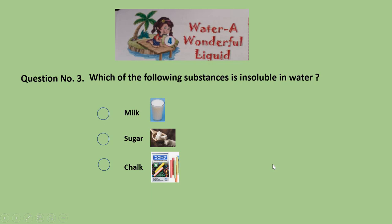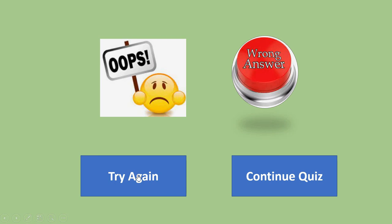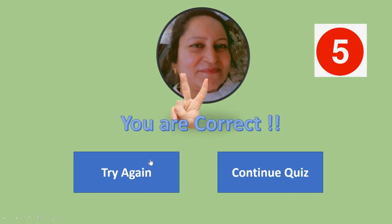Question 3: Which of the following substances is insoluble in water? Insoluble means it cannot be dissolved in water. Is it milk, sugar, or chalk? Milk — wrong. Sugar — again wrong. Chalk is insoluble in water. Give yourself 5 marks for the correct answer. If the answer is wrong, do not give marks to yourself.